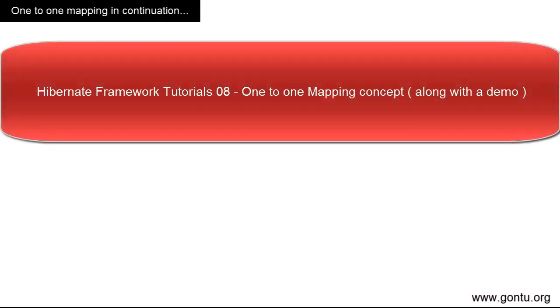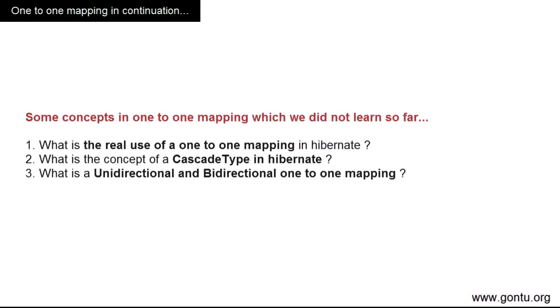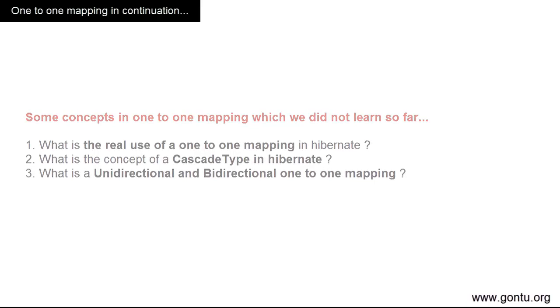Hey guys, my name is Amkush Gaurav and I welcome you to CON2 series. In the earlier tutorial, we learned the meaning of one-to-one mapping in general and then understood how to do it at Java code level using Hibernate. Now in this tutorial, we're gonna learn some important points about one-to-one mapping which we didn't learn so far: what's the real use of a one-to-one mapping, what is a cascade type and how is it related to a one-to-one mapping, and what is a unidirectional and bidirectional one-to-one mapping. Let's start.